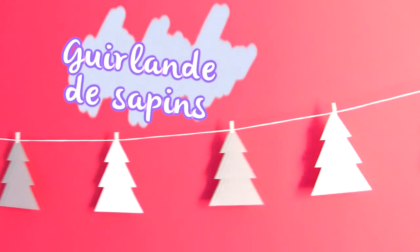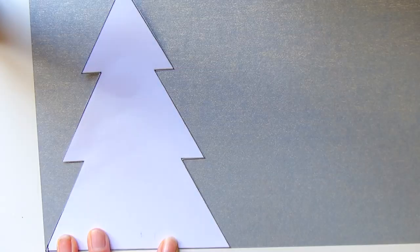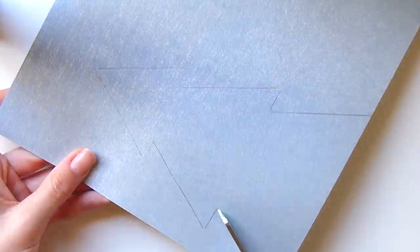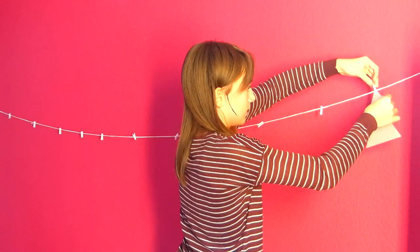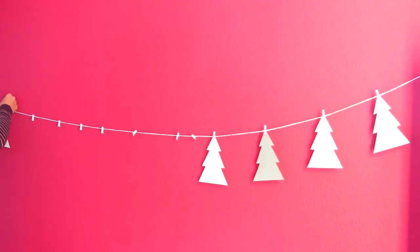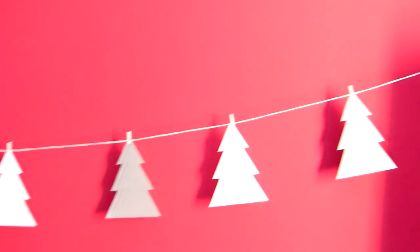Le DIY suivant est pour réaliser une guirlande de sapin. Je trouve ça vraiment trop mignon pour décorer une chambre ou n'importe où. Je suis venue imprimer un patron de sapin que je rapporte sur des feuilles canson blanche et argentée. Je découpe tous mes sapins, j'en ai eu besoin de 10 au total, 5 gris et 5 blancs. Je les dispose ensuite sur une corde à l'aide de petites pinces. Le DIY est déjà fini, c'est super simple mais trop chou.